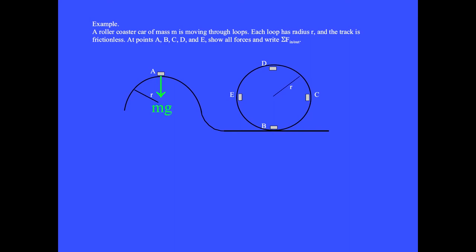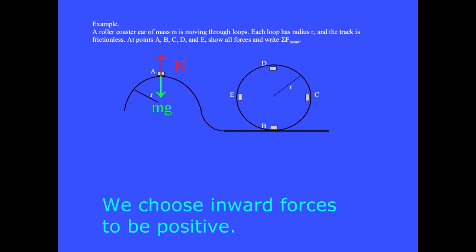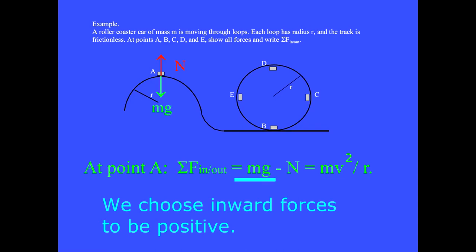At point A, Earth's gravity pulls the mass downward against the track, and in reaction, the track pushes upward with the normal reaction force. We choose the inward forces to be positive. Since the weight Mg points inward toward the center of the circle, we write plus Mg. Since the normal force points away from the center, we write minus N equals Mv² over R.